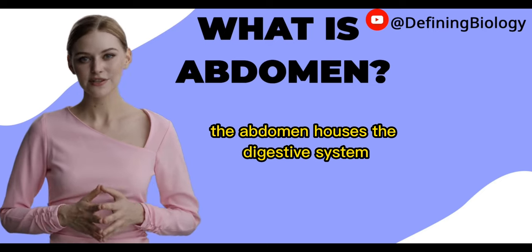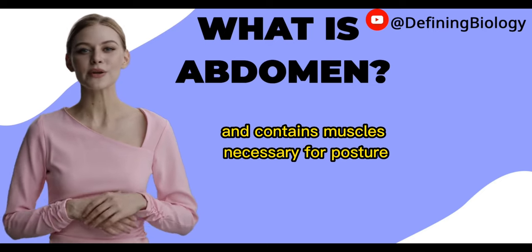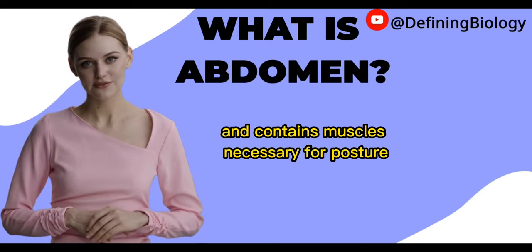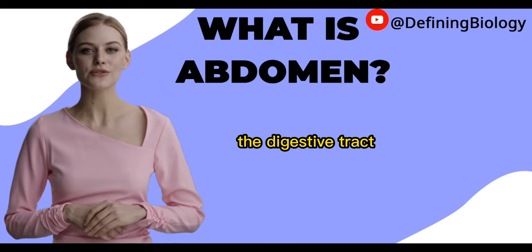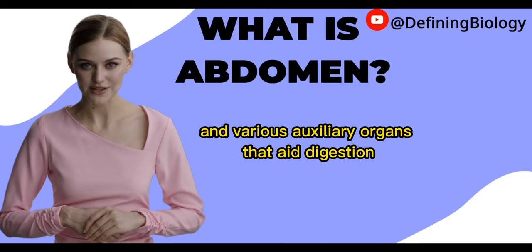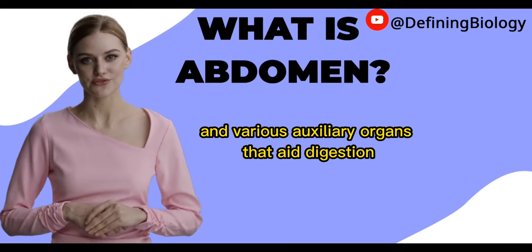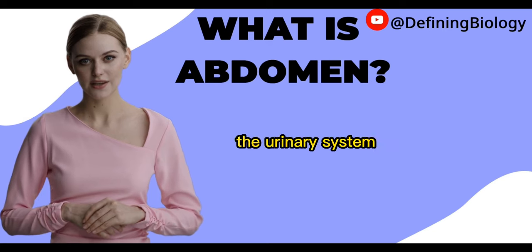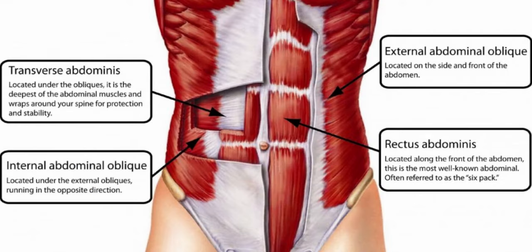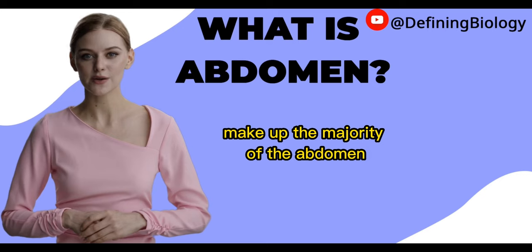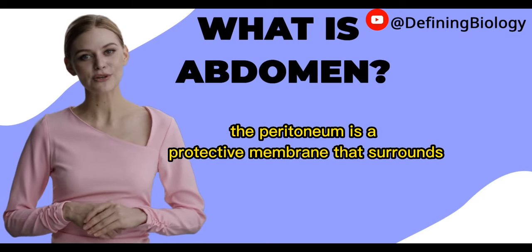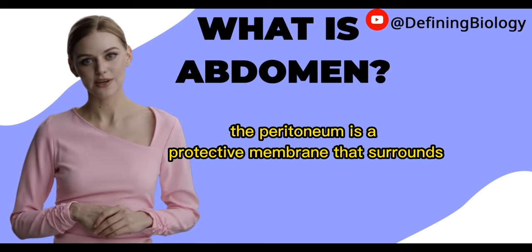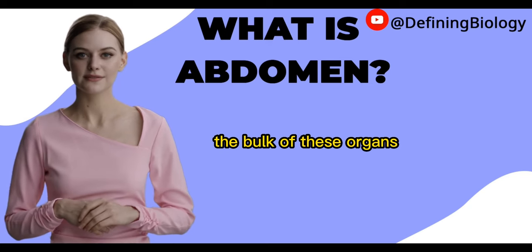The abdomen houses the digestive system and contains muscles necessary for posture, balance, and breathing. The digestive tract and various auxiliary organs that aid digestion, the urinary system, the spleen, and the abdominal muscles, illustrated below, make up the majority of the abdomen. The peritoneum is a protective membrane that surrounds the bulk of these organs.